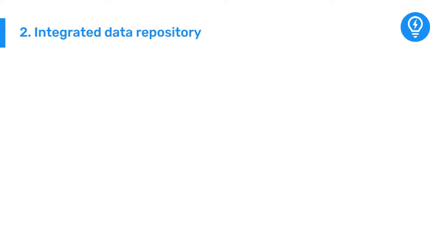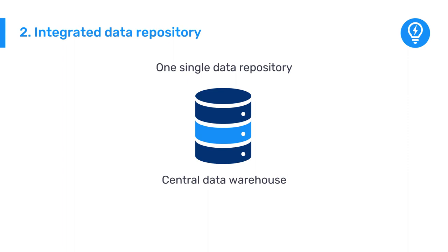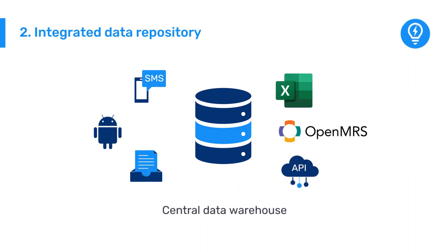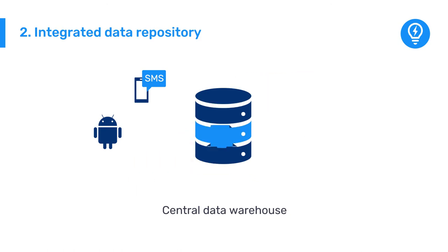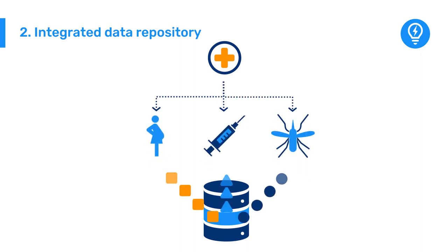The second principle we will discuss is that DHIS2 supports a flexible data model that promotes different data sources to be integrated into one single data repository — in other words, how DHIS2 can be used as a central data warehouse. In a health system, this can include data from multiple health programs capturing their data directly through DHIS2, data from other sources such as surveys or census data on population, or data from other systems such as the number of staff in a facility or school.